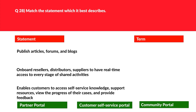We got another match statements question. Let's look at statement 1: publish articles, forums, and blogs. Just relate this statement with a blogging site to answer this type of question. Obviously, we write blogs for a community, which can benefit the community. Sometimes we interact with blogs by commenting and providing ratings as well. Hence, community portal looks good. We'll move this here.